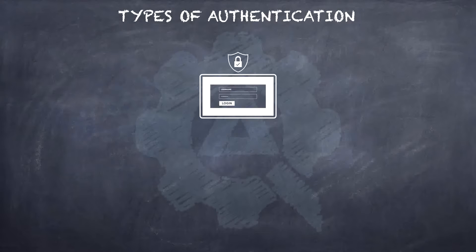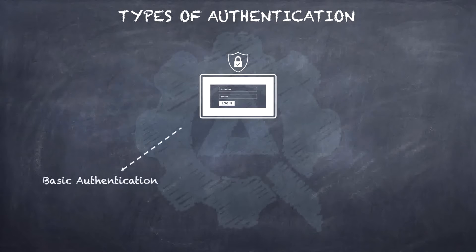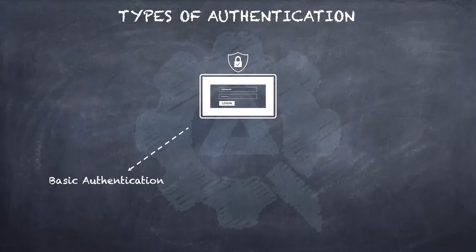The first one we will learn about is basic authentication. Basic authentication is a process for the browser to request a username and a password. Once these are supplied, the resources are available for which the request has been sent. This username and password is the first step to authenticate the user.